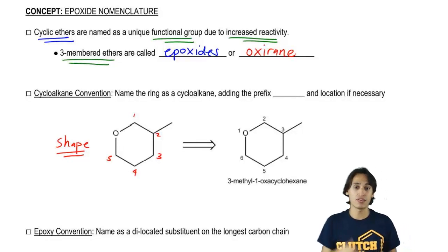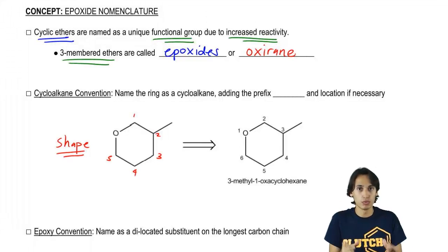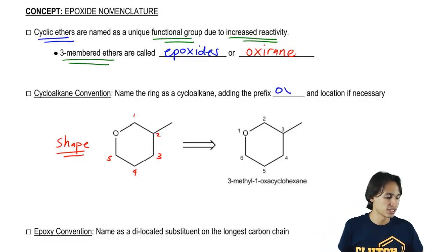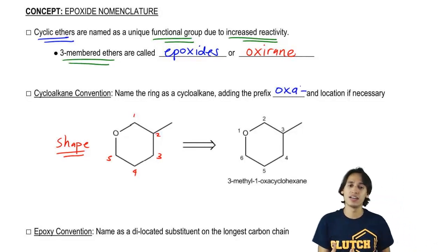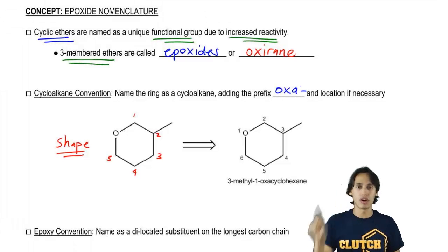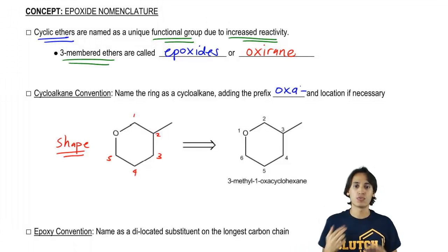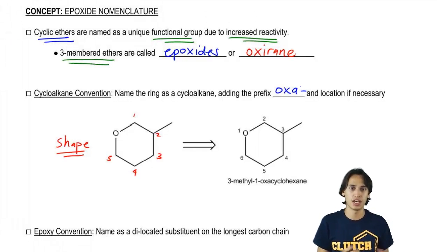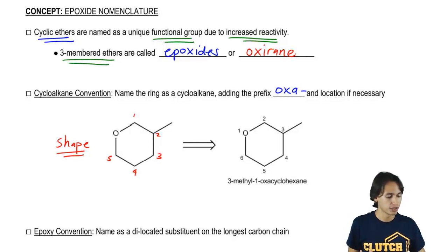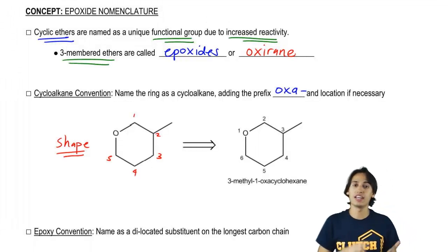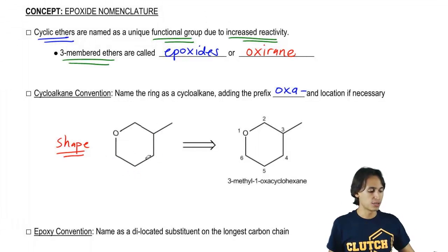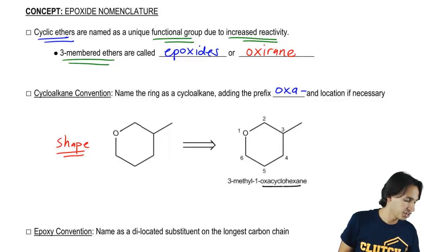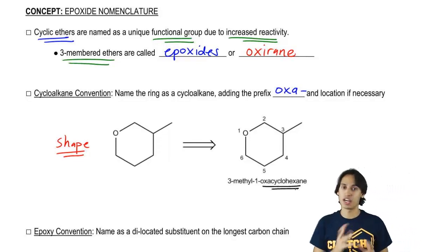So this would be a cyclohexane first of all as our root. Now the difference is if we have oxygens inside of a ring, which is by definition a cyclic ether, then we're going to add the prefix oxa. And what oxa is going to tell us is that there is one member of this ring that is an oxygen. So if I call it oxacyclohexane, what I'm saying is that I have a six-membered ring where one of the atoms is an oxygen, not a carbon. And then obviously location if necessary. So let's go ahead and just talk about this for a second. The root is going to be the oxacyclohexane. Now we just have to talk about locations. How do we know where to put those guys?